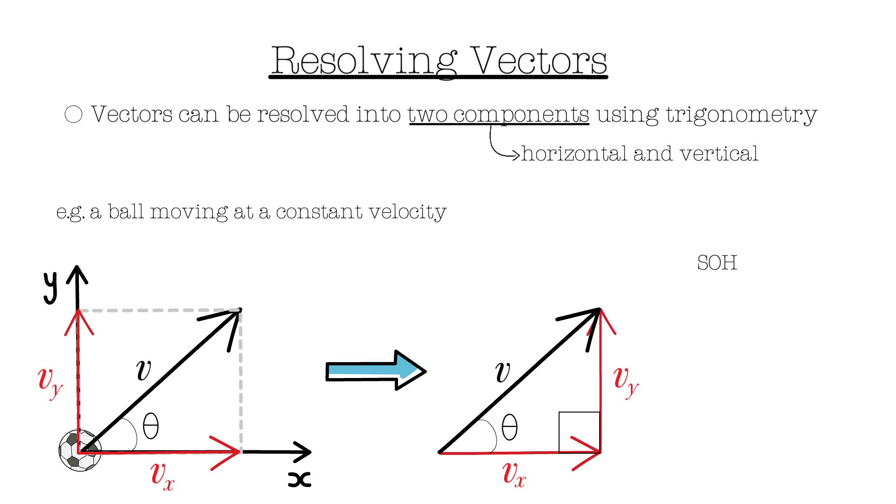From here, we can use SOHCAHTOA to find three expressions for the angle. TAN theta equals vy over vx, COS theta equals vx over v, SINE theta equals vy over v.